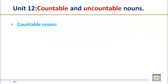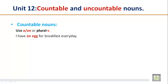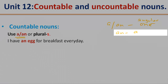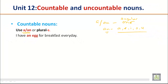Let's look at countable nouns first. We will see the use of 'a' or 'an'. 'A' or 'an' means one, so wherever there is a singular object we use 'a' or 'an'. We use 'an' before vowel sounds — the five vowels are A, E, I, O, U. For example: I have an egg for breakfast every day. Here 'an' means one, and since 'egg' starts with a vowel sound, we use 'an'.